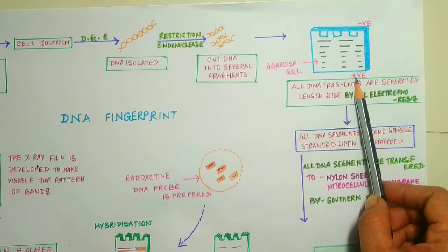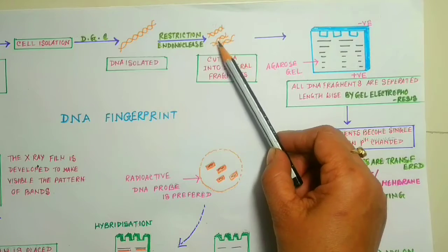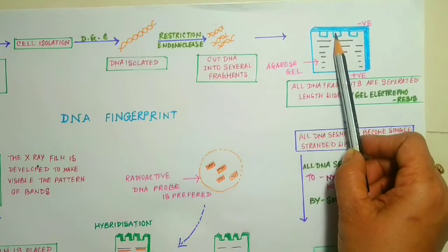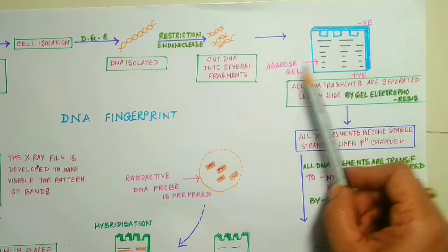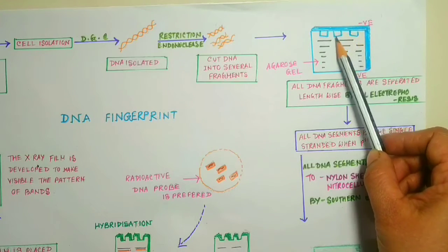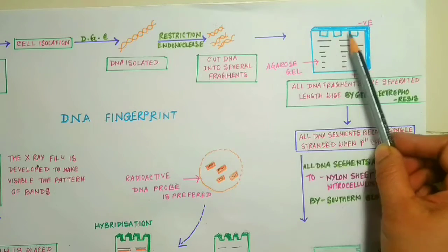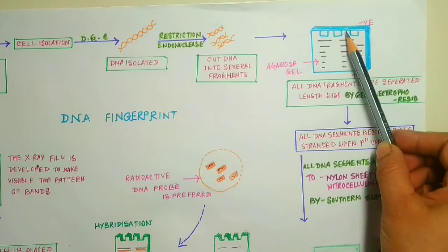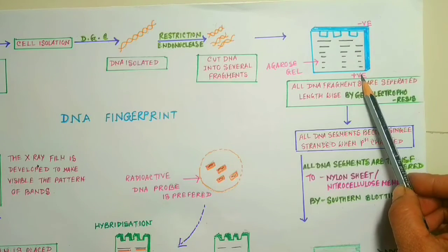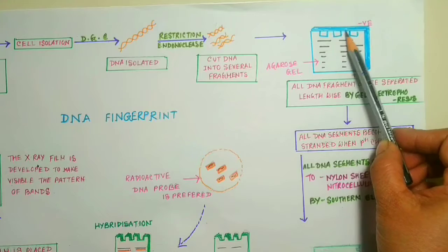This is the positive side and this is the negative side. There are some wells where the cut pieces of DNA or fragments of DNA are taken. As a medium, agarose gel is used here. When electricity is produced, under the force of electric field, this DNA is forced to move towards the positive side.